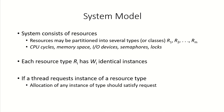In this video we are going to introduce the concept of deadlocks and see how deadlocks are caused. A computing system consists of resources, and these resources may be partitioned into several types or classes — r1, r2, up to rm if there are m types of resources. These resources can be CPU cycles, memory space, various input/output devices, semaphores, and locks — these are all system resources, each being a different type.